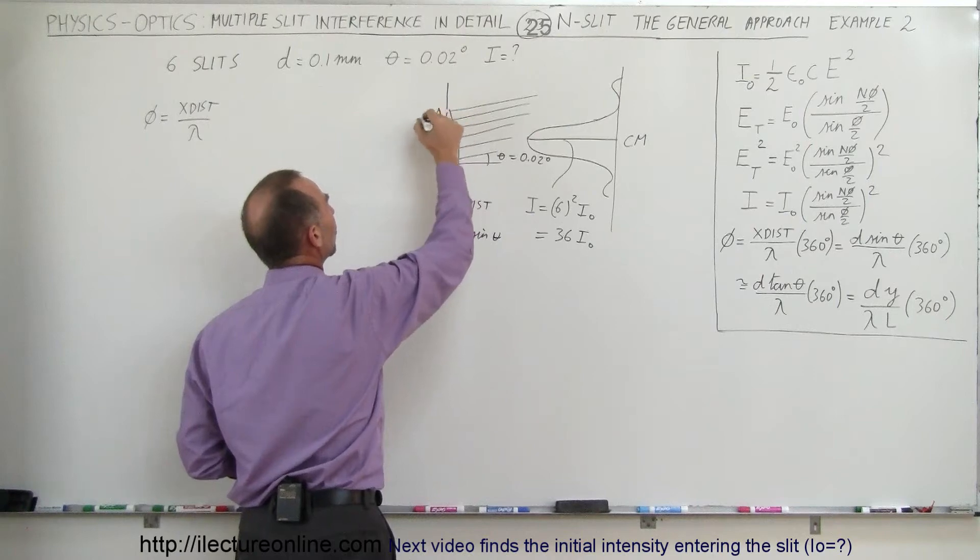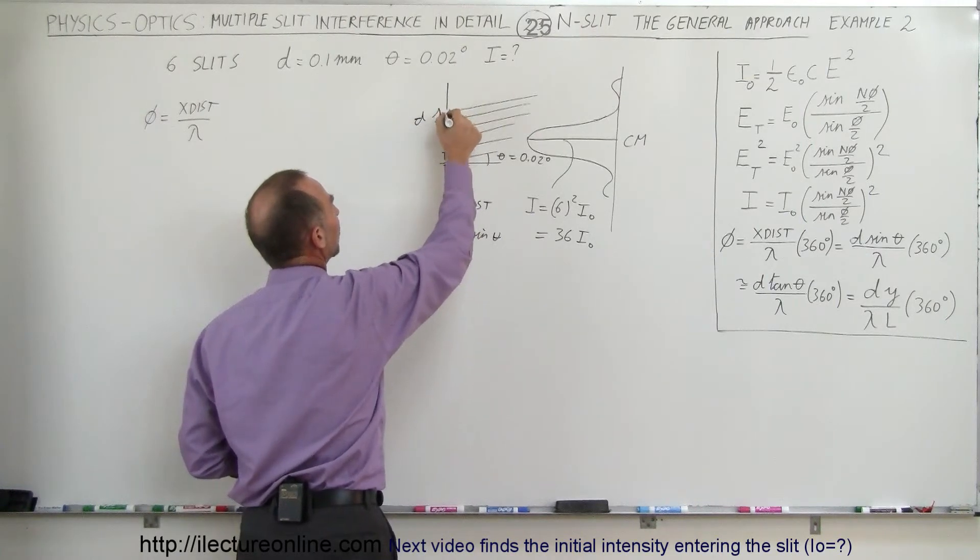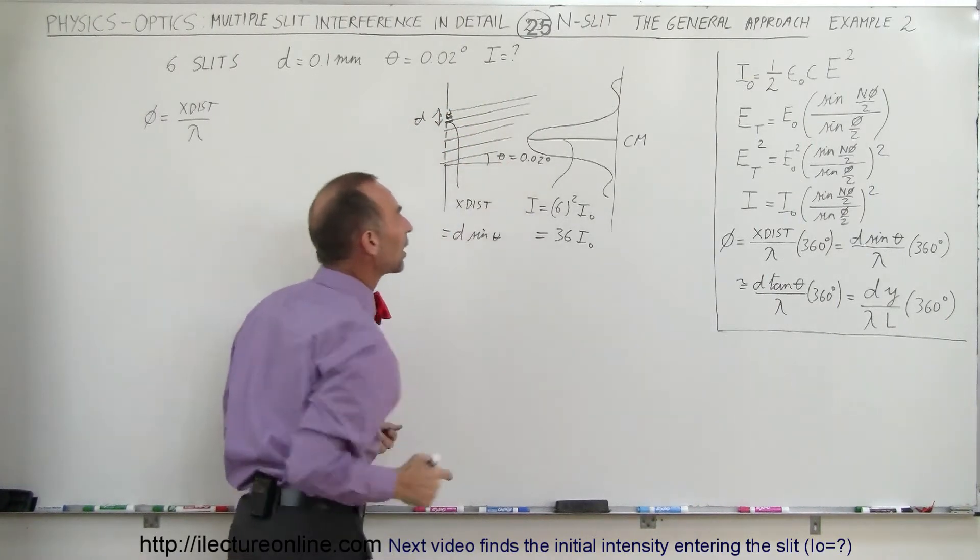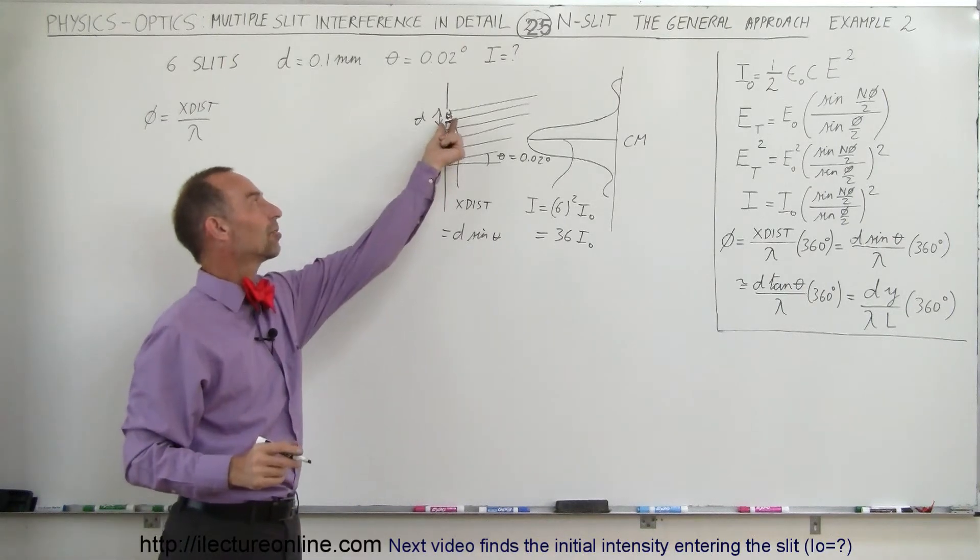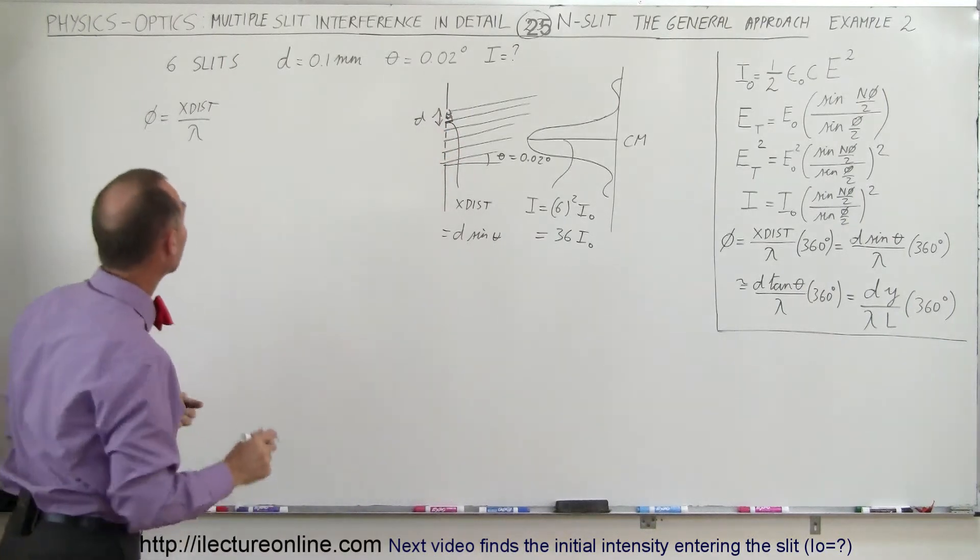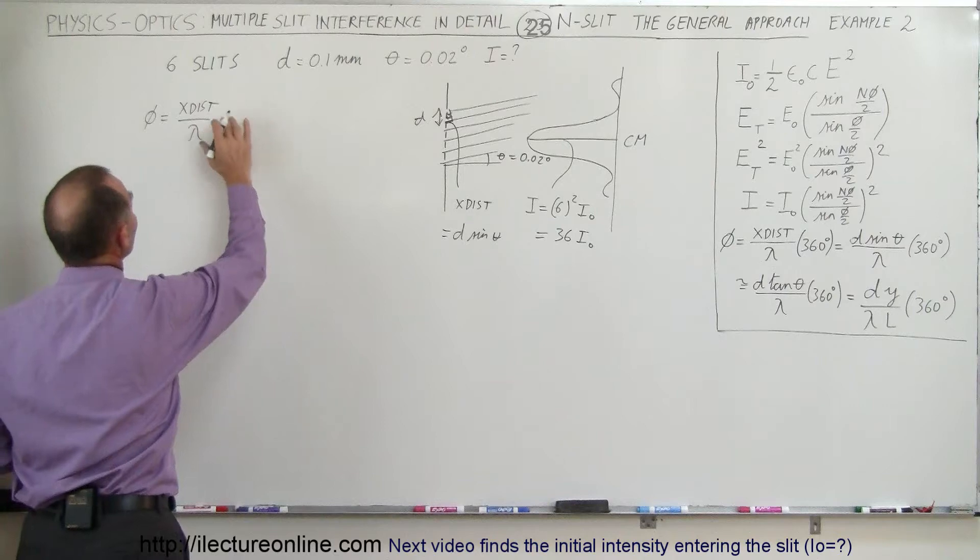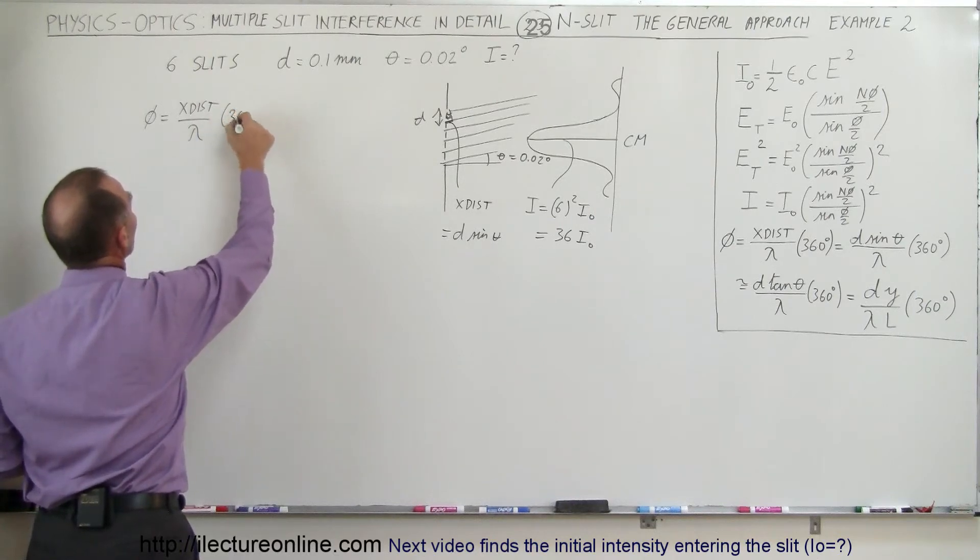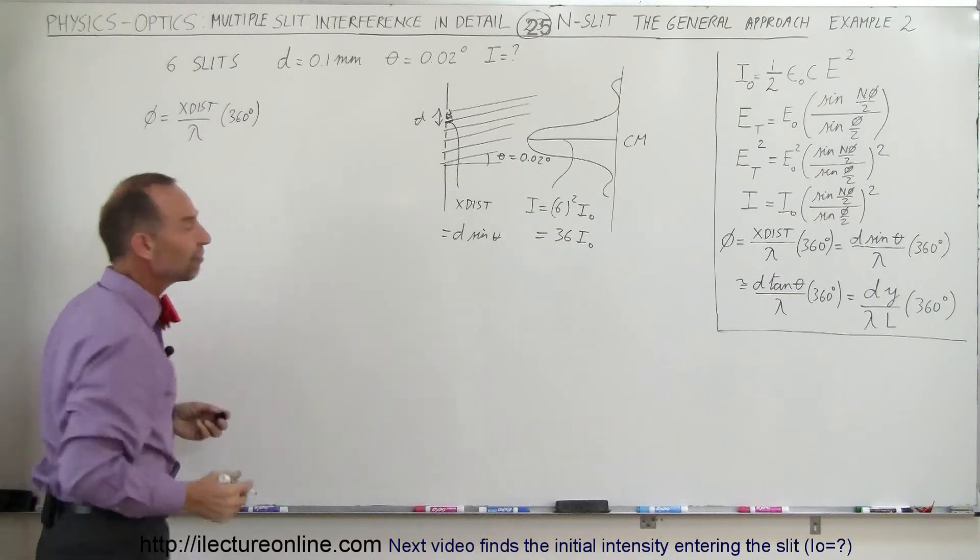d would be the distance between two adjacent slits and theta would be this angle, which is the same as this angle right there. So that gives us the opposite side to that little triangle right there. And so we can say that would be this times 360 degrees, which is one complete phase.